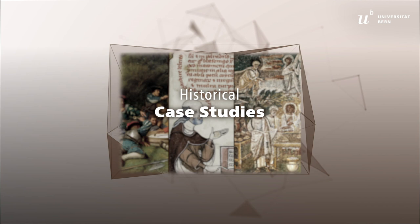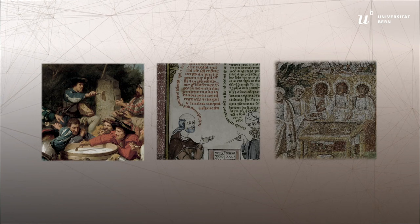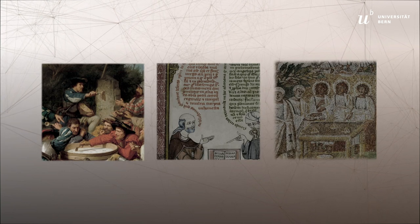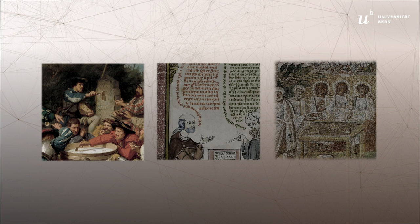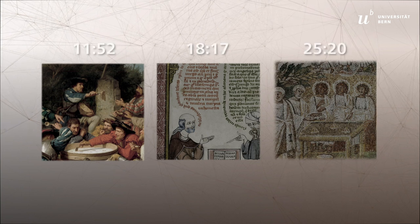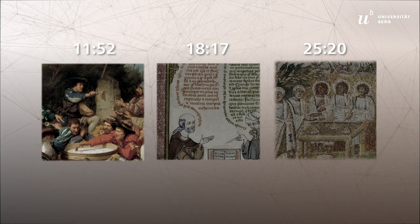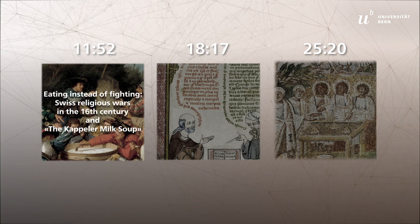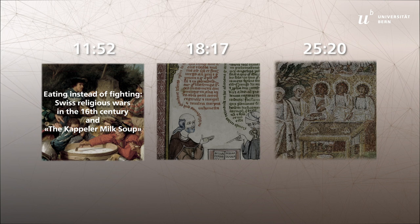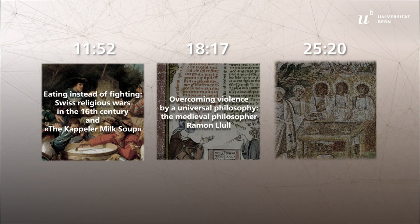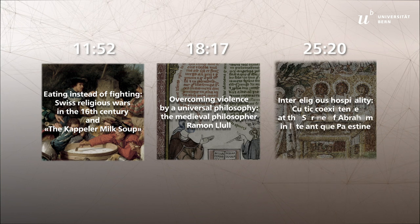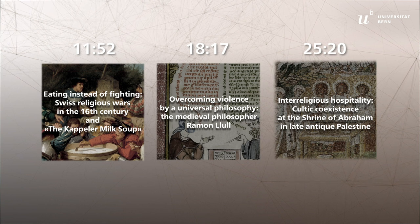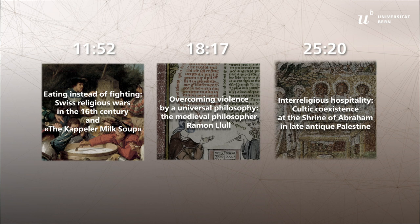The following three historical case studies will show you which coping strategies were used in religious conflicts and the effects they had. Each case study starts with a summary of the events, followed by a discussion using the analytical model. Case study one: Eating instead of fighting — Swiss religious wars in the 16th century and the Kappeler milk soup. Case study two: Overcoming violence by a universal philosophy — the medieval philosopher Ramon Llull. Case study three: Interreligious hospitality — cultic coexistence at the shrine of Abraham in late antique Palestine.